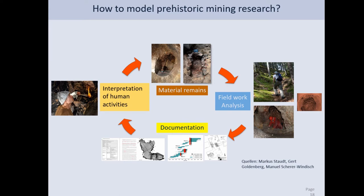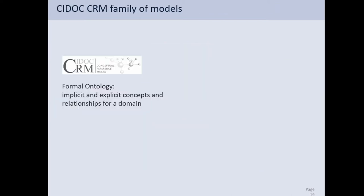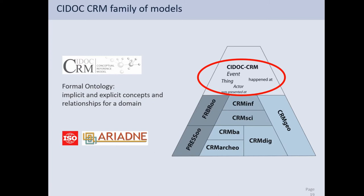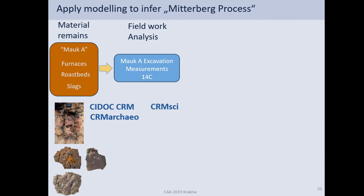These interpretations also shed new light on the material remains that have been found — with interpretations you see things in a new light, making this a kind of circle. We're using the CIDOC CRM family of models to represent this research, which is used in ARIADNE and is an ISO standard. In the core it's the event-centric model, and in this project we're using the extensions for argumentation CRMinf, for scientific observation CRMsci, CRMarchaeo, and CRMdig for the provenance of digital documents.